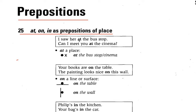So 'at' is the preposition. Can I meet you at the cinema? 'At' shows a place — at the bus stop, at the cinema.